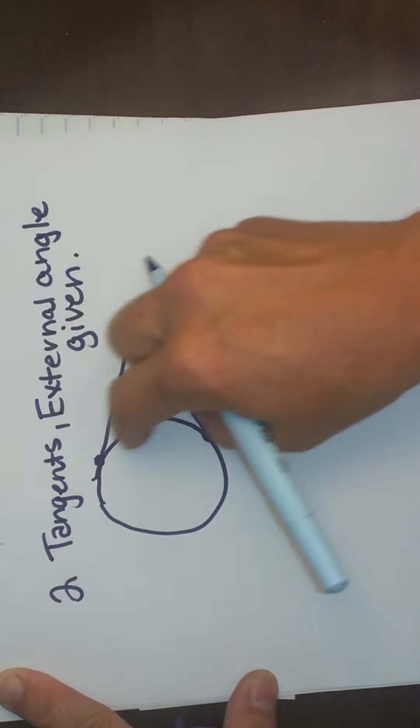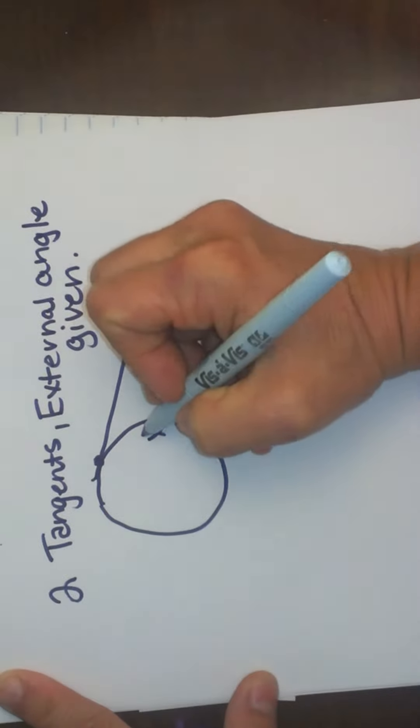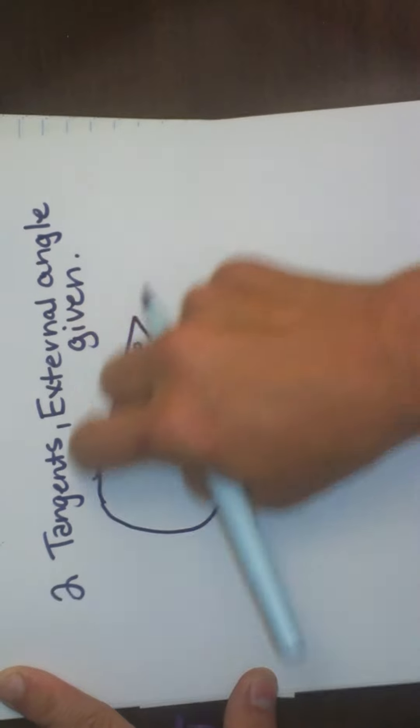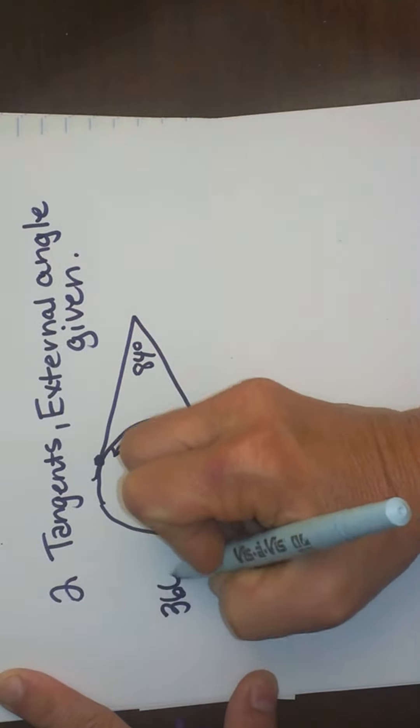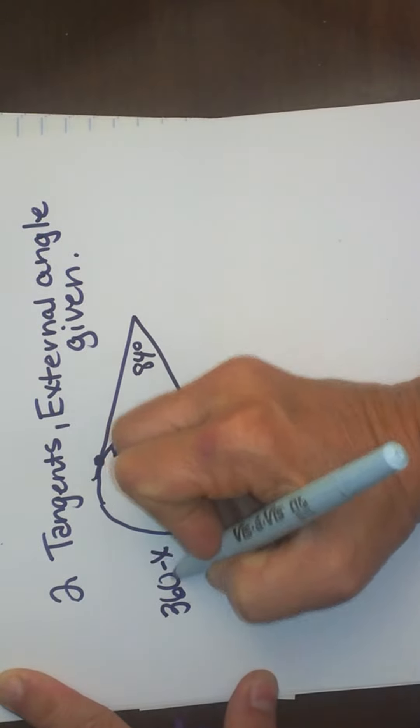So what I am going to do is I am going to label this smaller arc x. If that arc is x then we know the whole circle adds to 360. This external angle or this larger angle on this side must be 360 minus x.